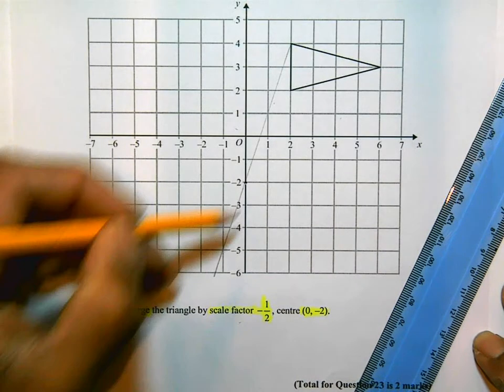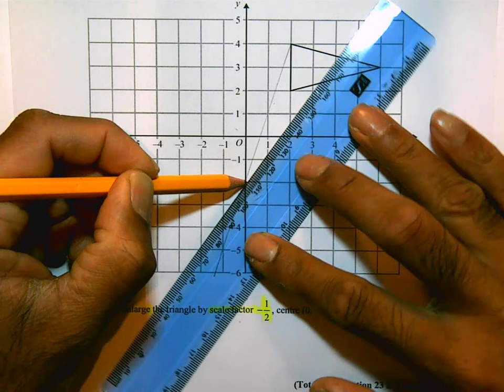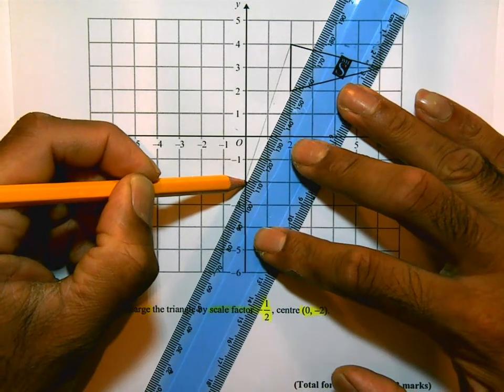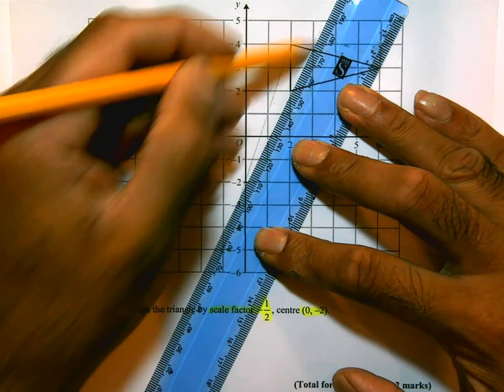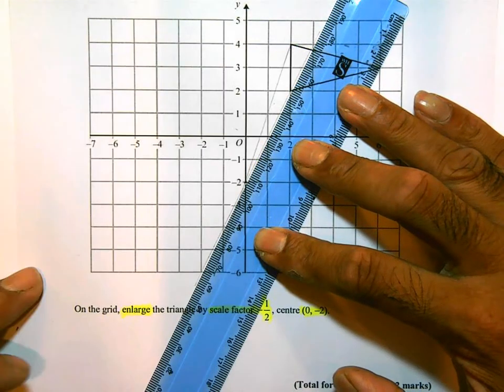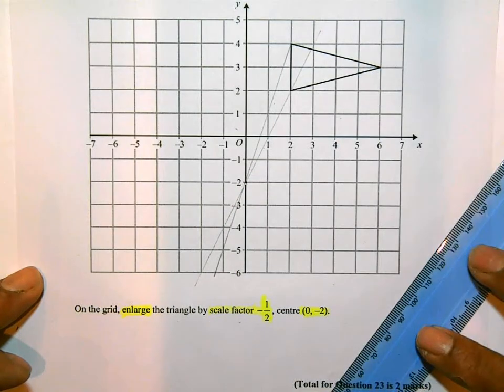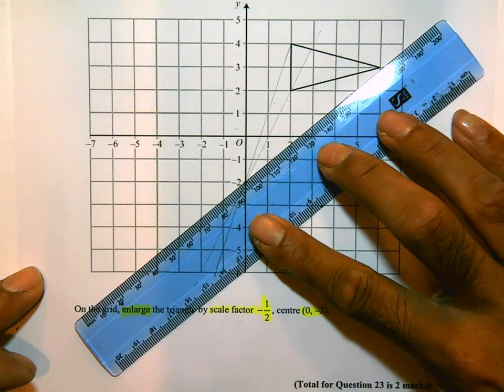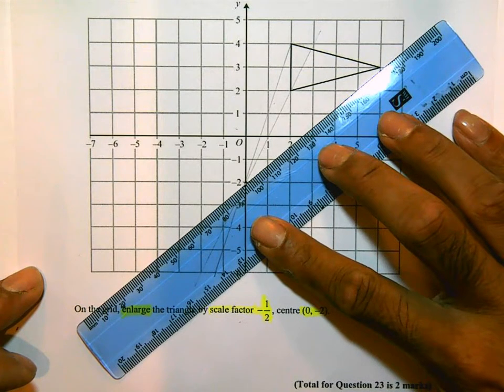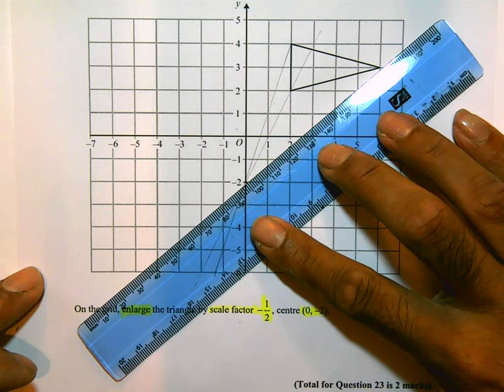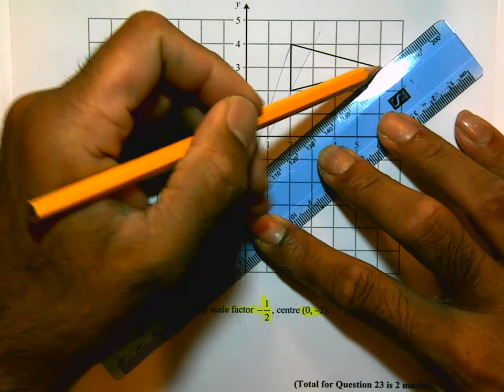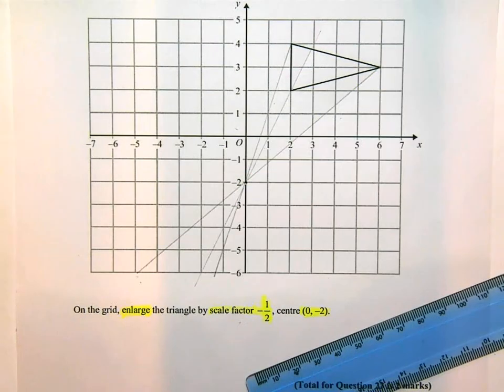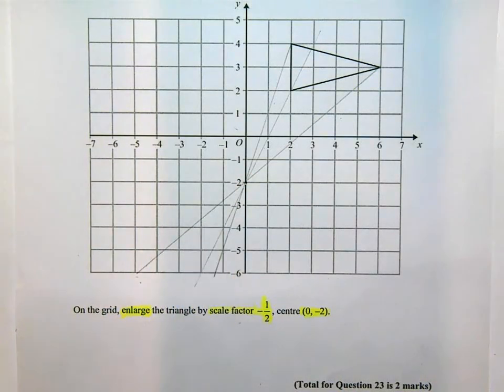Doing it again through the other point. And then through the point at the top. Now remember, because this is a scale factor of minus a half, the answer is going to be on the other side of the center of enlargement. That's why I brought the lines back.